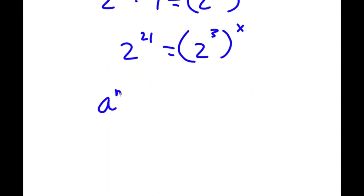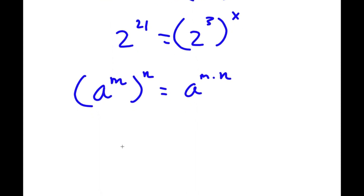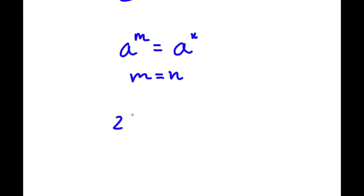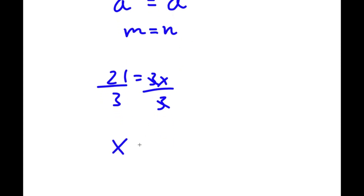If I have something in the form a to the power of m to the power of n, this is equal to a to the power of m times n. So 2 to the power of 3 to the power of x equals 2 to the power of 3x. So I have 2 to the power of 21 is equal to 2 to the power of 3x. Since the bases are equal, 21 equals 3x. Dividing both sides by 3, x equals 21 divided by 3, which is simply 7.